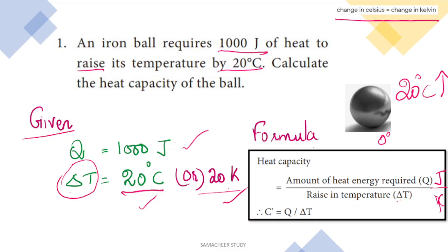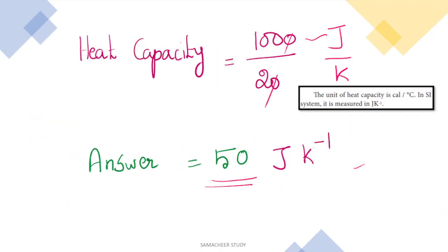The rise in temperature is 20 degrees centigrade, which equals 20 Kelvin. So there is no confusion here — whether it is given in centigrade or Celsius, it corresponds to the same numerical rise in Kelvin. The direct substitution is 1000 divided by 20.